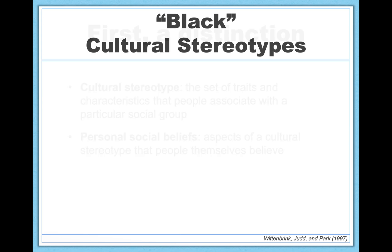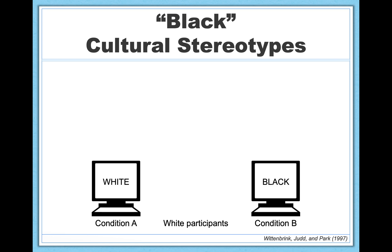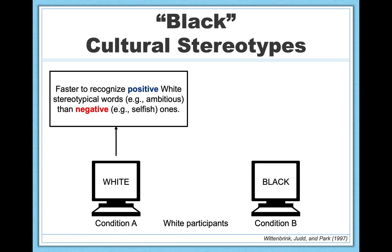Let's dive into a few studies. In a classic study, white participants' racial stereotypes were primed by using a white or black word on a computer, flashed very briefly for about two-tenths of a second — not enough time for participants to consciously recognize the word, but enough time to influence their responses. The results showed that the white prime facilitated participants' recognition of positive, for example ambitious, compared with negative, for example selfish, white stereotypical words.